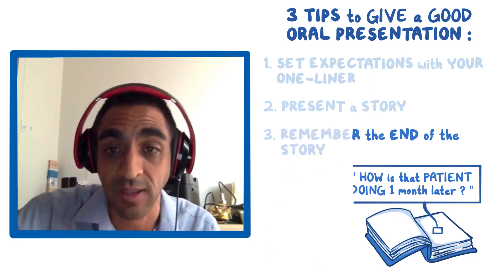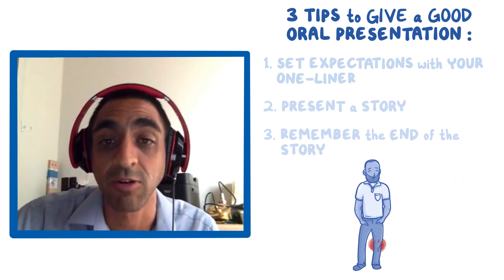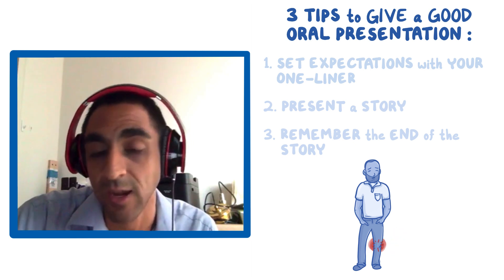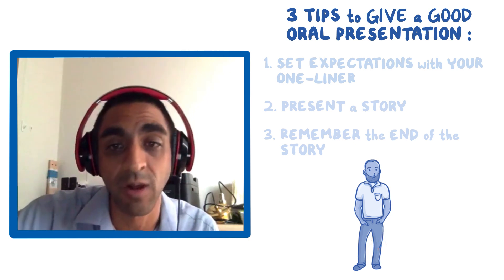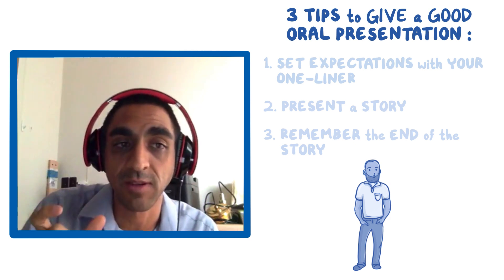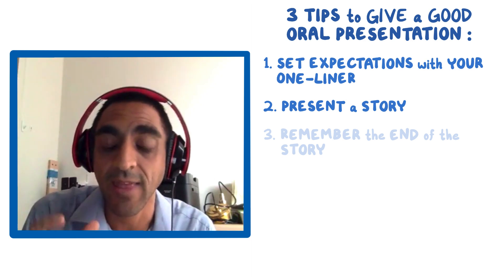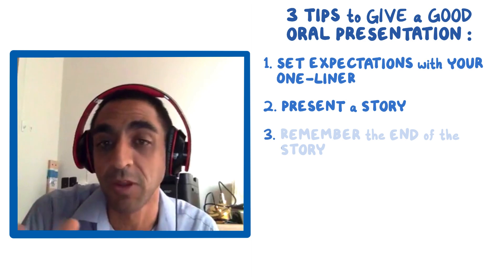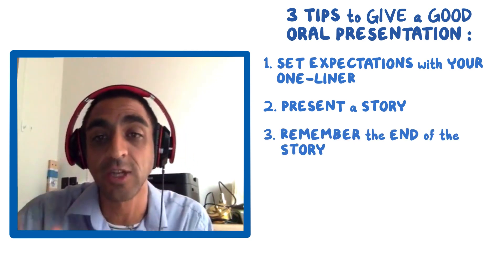That story I presented was gout. So the next patient you see with terrible gout, you can say: we had a 55-year-old man with terrible knee pain, ended up being gout — we treated him and he did really well long term. So I really encourage you: the three tips are set expectations with your one-liner, present a story when presenting orally, and go back and look things up. Share that end of the story with people — let them know how the patient ended up doing, so everyone understands the full story.